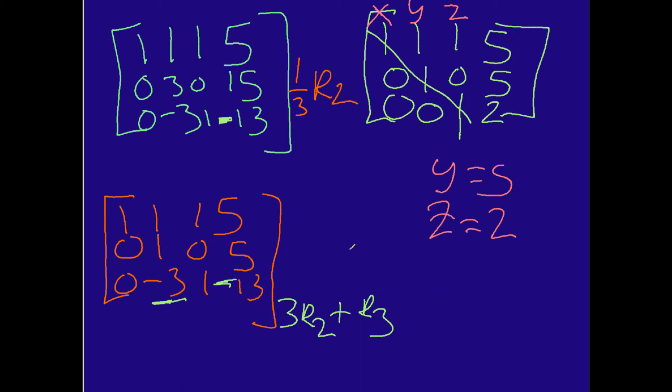So now we just have to do really basic algebra to figure out, well, what is the value for x? So we're going to take this first row and simply solve for x. So x plus y, which is 5, plus z, which is 2, equals 5. So x plus 7 equals 5. x equals negative 2. So I can put that here. x equals negative 2. So we have our three values.